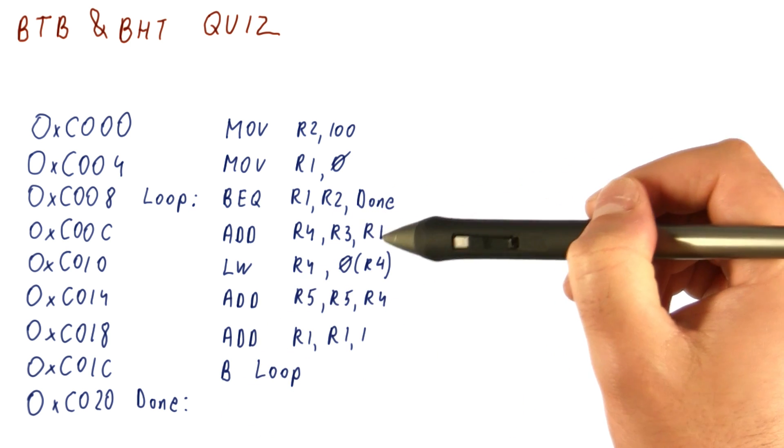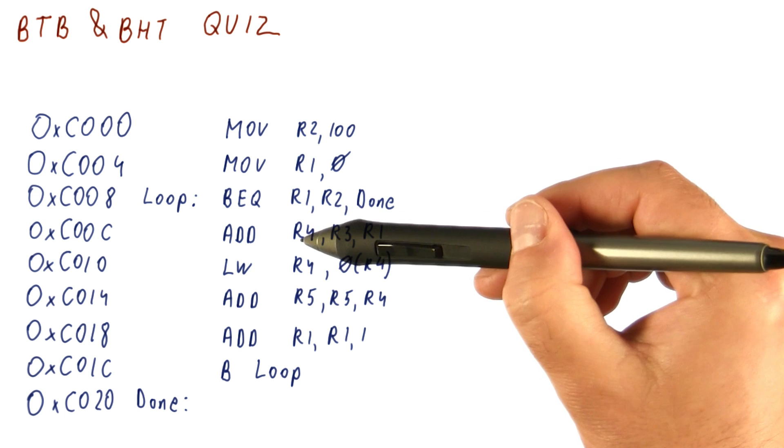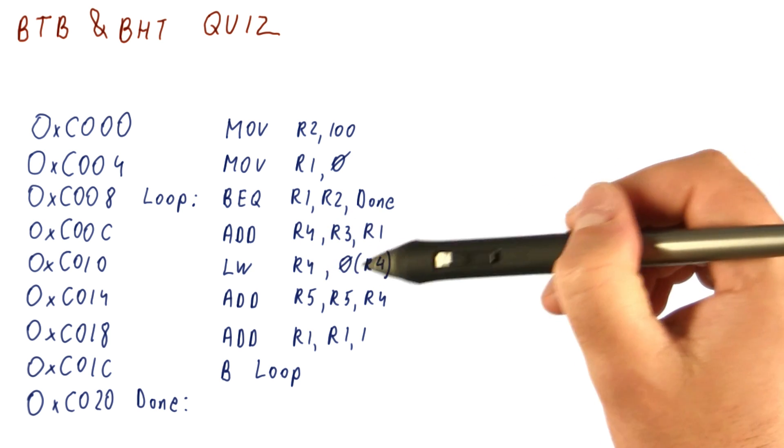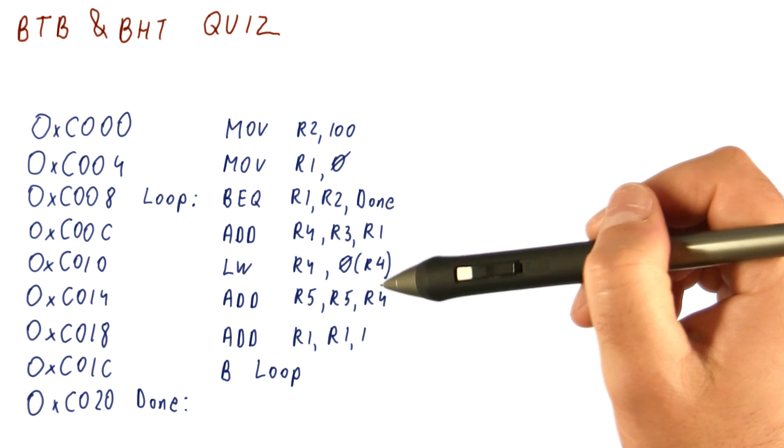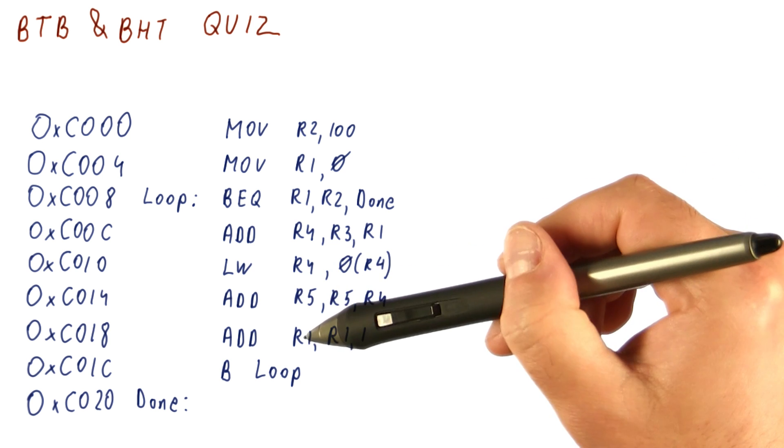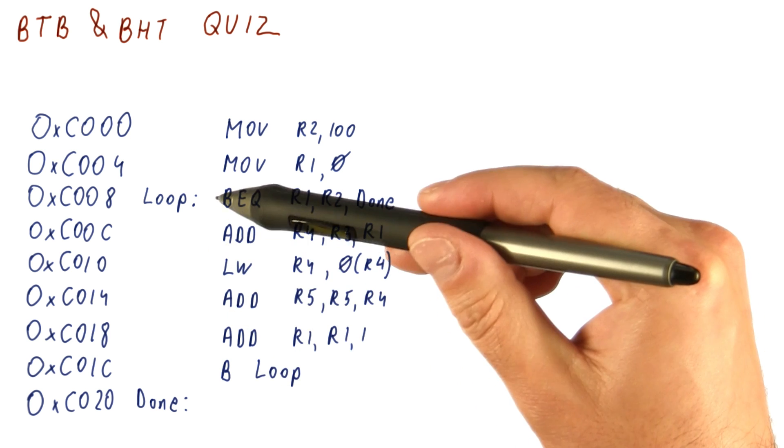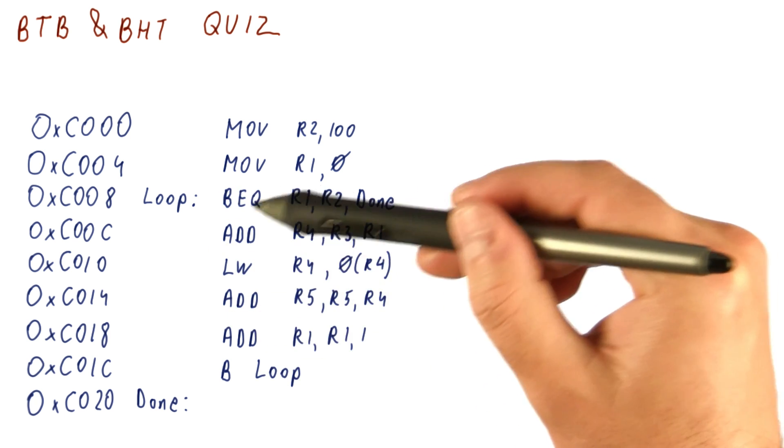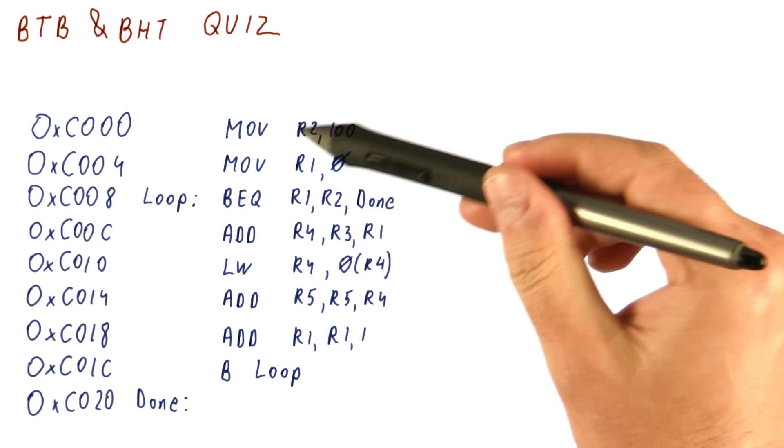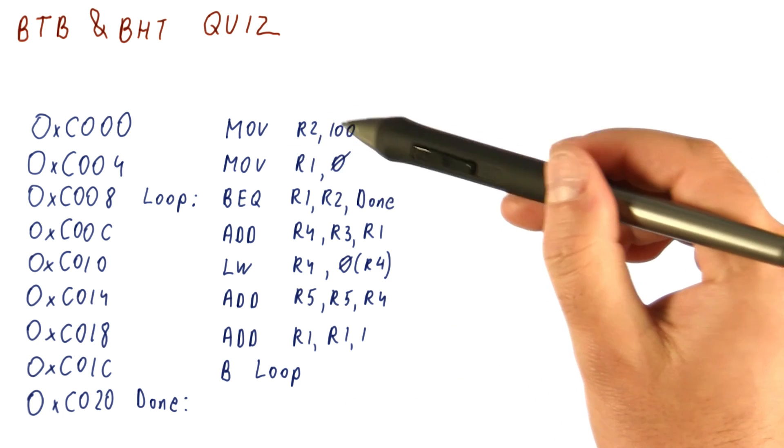In the loop, it's adding R1 to R3 to form R4, uses that to load a value from that address, and then adds that R4 to R5, adds 1 to R1, and then unconditionally branches back to this loop. So this is the loop. This is where we exit from the loop, and this is the initialization for the loop.